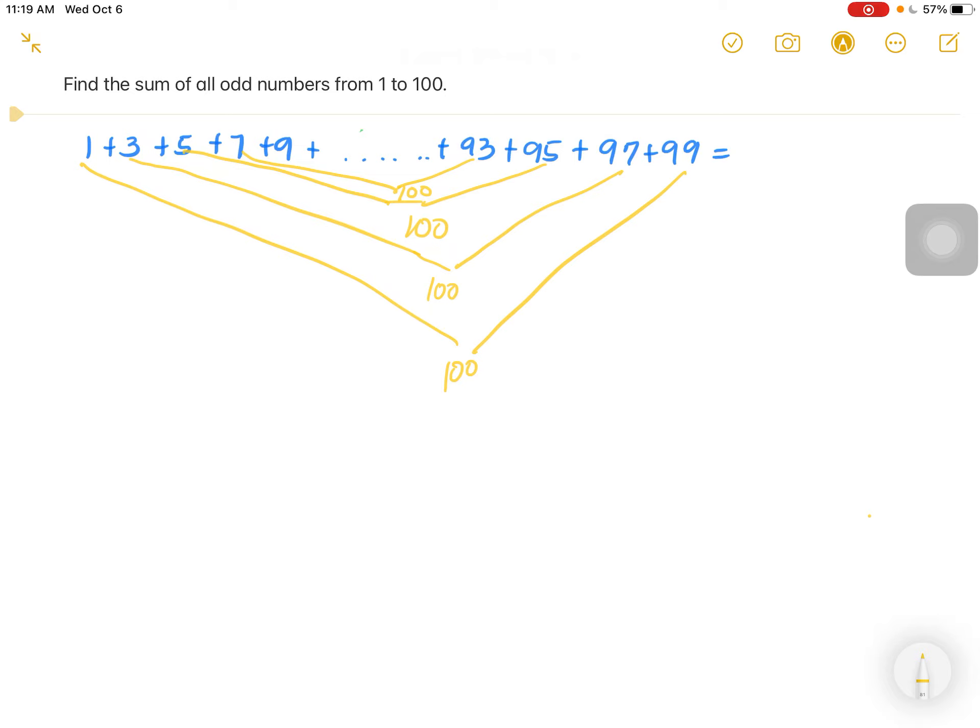And with that, how many odd numbers are there in 1 to 100? Of course, it'll be half, so there will be 50 odd numbers from 1 to 100.